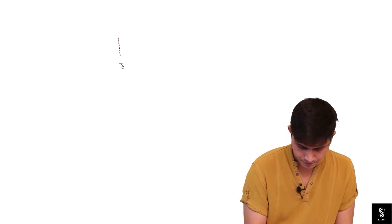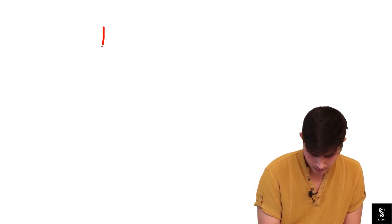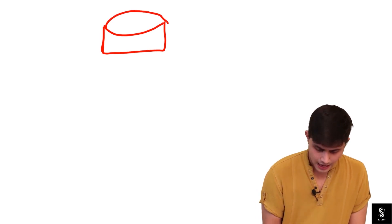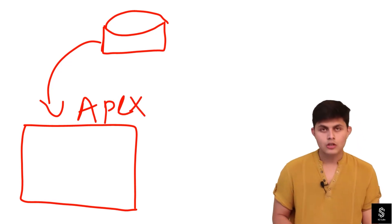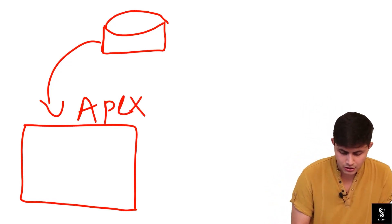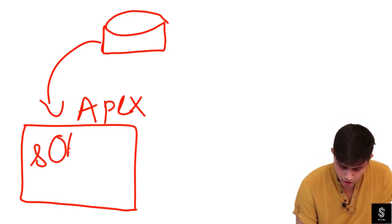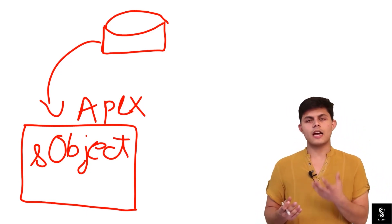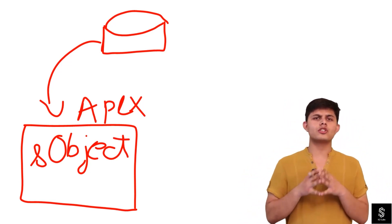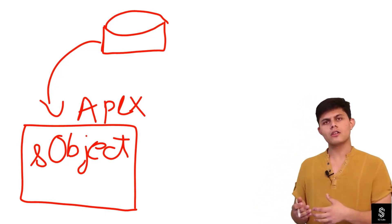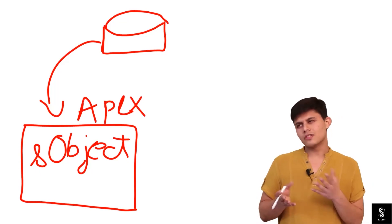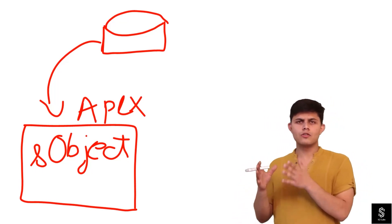Imagine this is your database. You are fetching a single record from this database into Apex. The record that you have fetched from the database comes into Apex in the form of an sObject. An sObject basically stores all the information related to that particular record — all the field values and all the other properties set for that particular record.